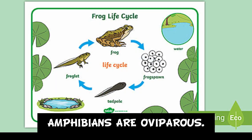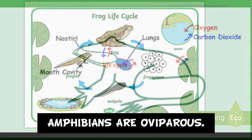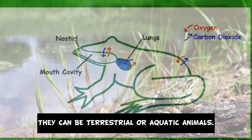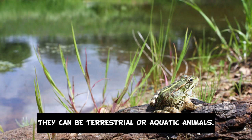Amphibians are oviparous. They've got lungs, gills, and bare skin. They can be terrestrial or aquatic animals.